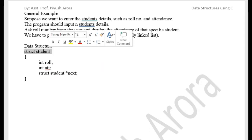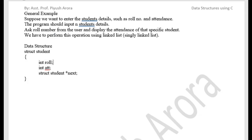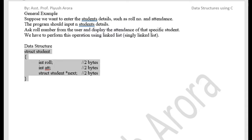We have defined a structure called struct student. The role number is an integer data type, so it will require two bytes of memory space. Similarly, attendance is also an integer, so it will also require two bytes of memory space. And any pointer always takes two bytes of memory space in Turbo C. So we need to create a block of six bytes.